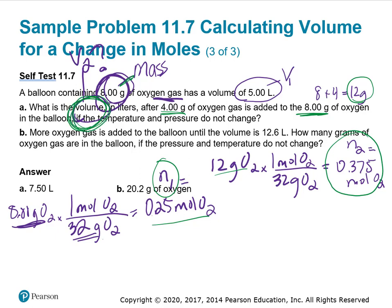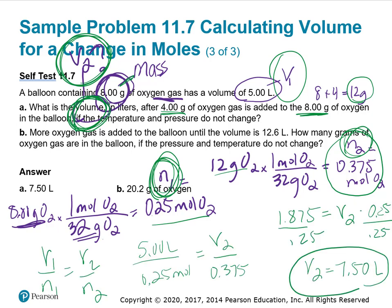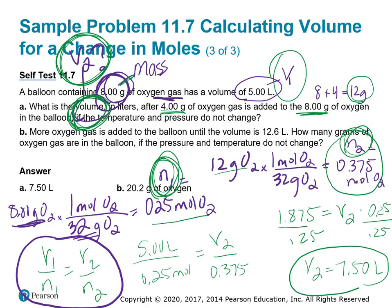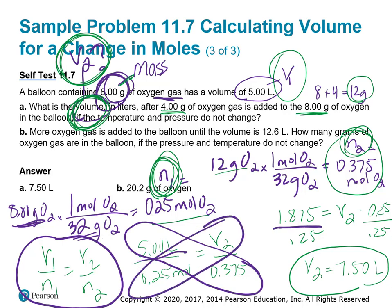Then it says after 4 grams of oxygen gas is added to the 8 grams, that's 12 grams of oxygen gas. I went 12 grams to moles to get N2 of 0.375 moles. It wants to know what volume in liters, so we need to find V2. We're given V1 and we just converted grams to moles, so we know mole 1 and mole 2. Let's set up our equation. We'll use the equation that relates volume and moles: V1 over N1 equals V2 over N2. My first volume was 5 liters, my first moles was 0.25, equals V2 over 0.375. I cross-multiply, so 5 times 0.375 is 1.875, and V2 times 0.25. To get V2, divide both sides by 0.25, and with three significant figures, we end with a final volume of 7.5 liters.